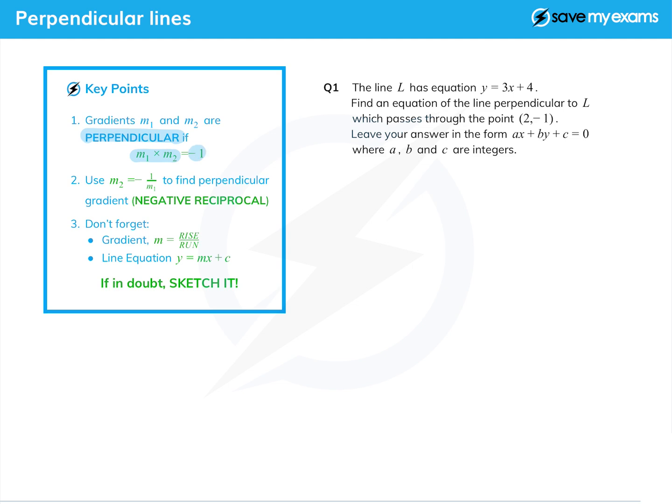If you want to, you can remember this as one is the negative reciprocal of the other. In other words, m₂ is minus one over m₁, but it's just as easy to remember that they multiply together to give minus one.